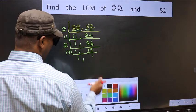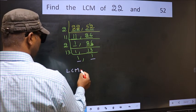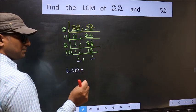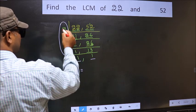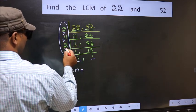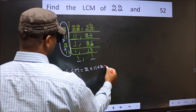So we got 1 in both places. So our LCM is the product of these numbers, that is 2 × 11 × 2 × 13.